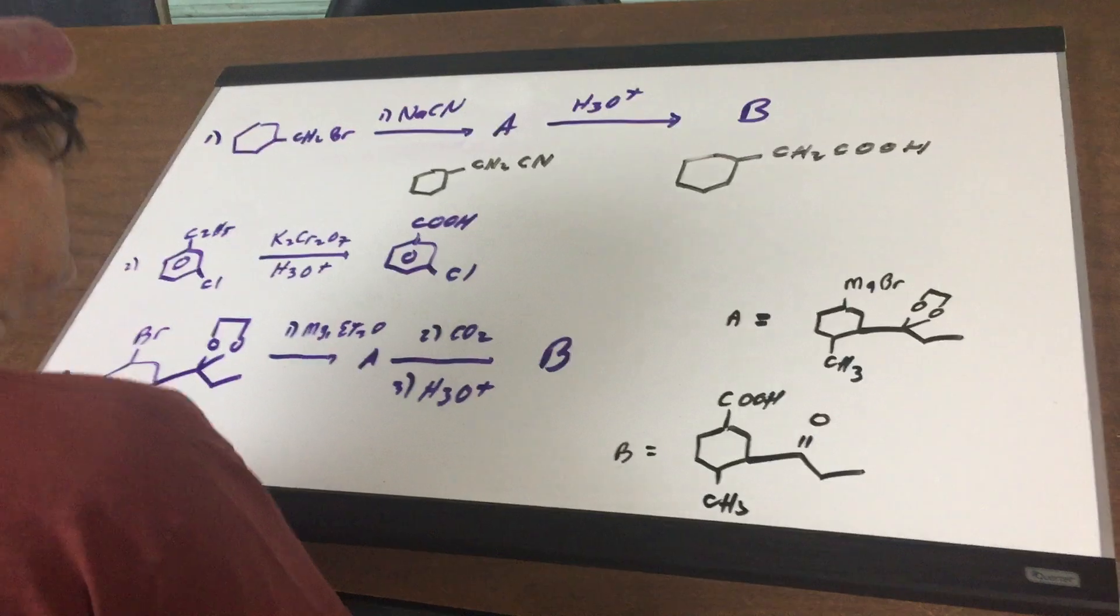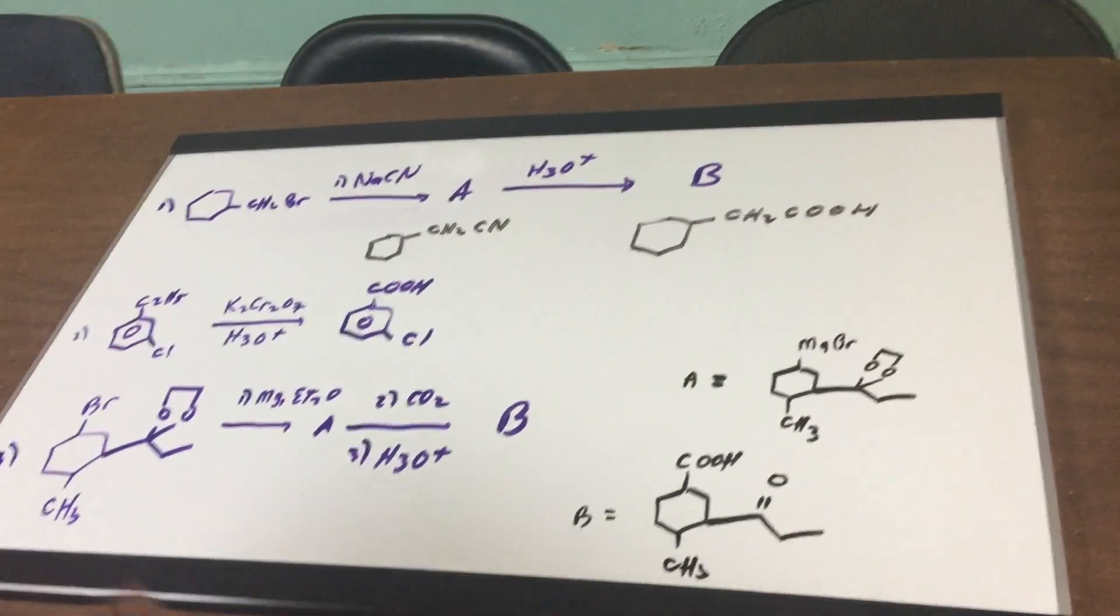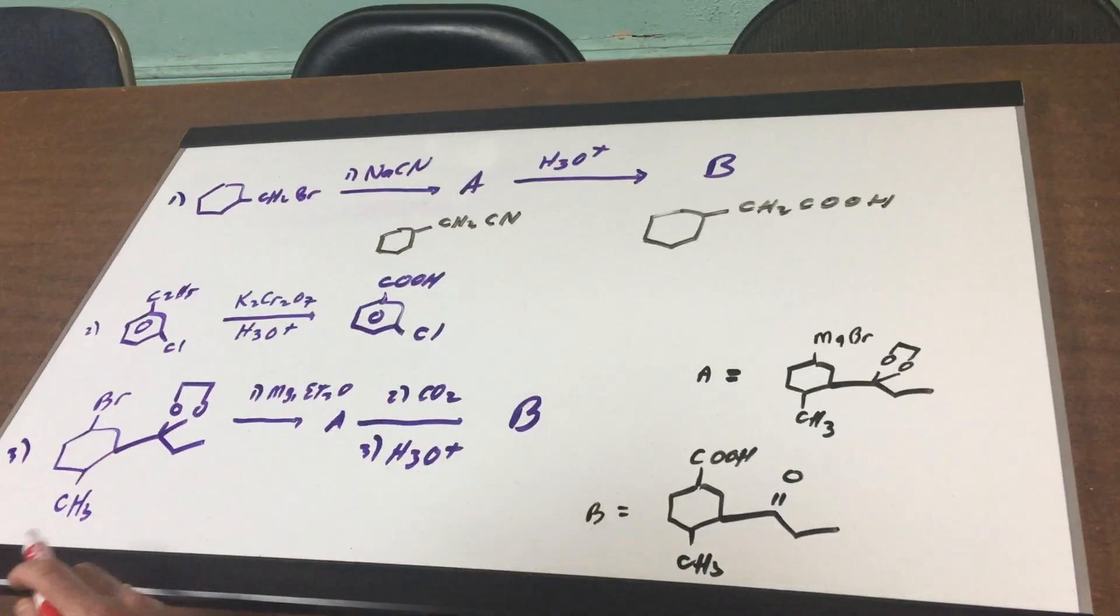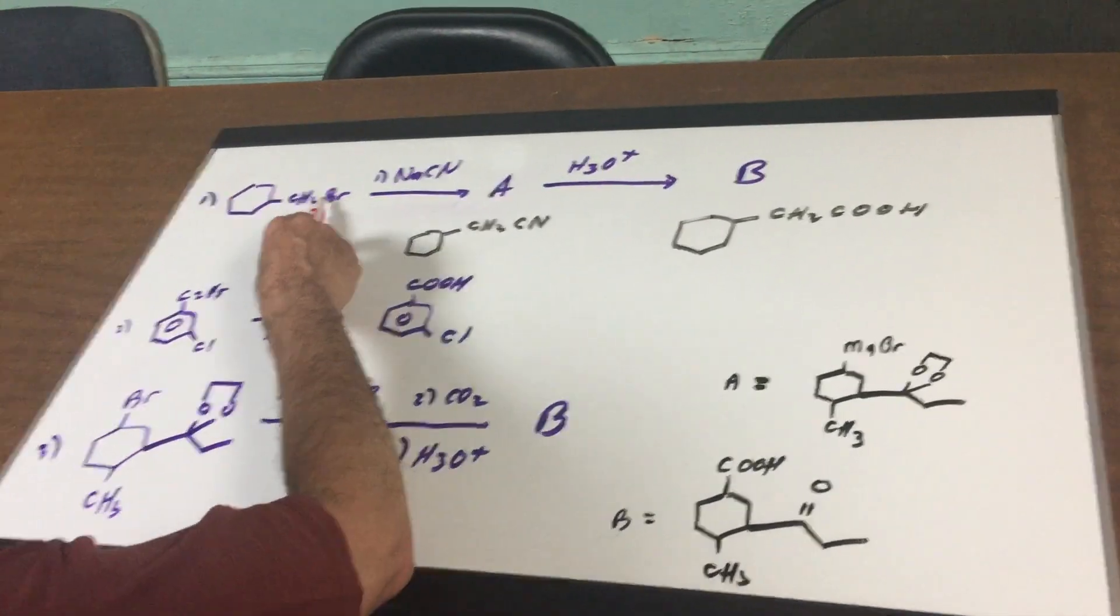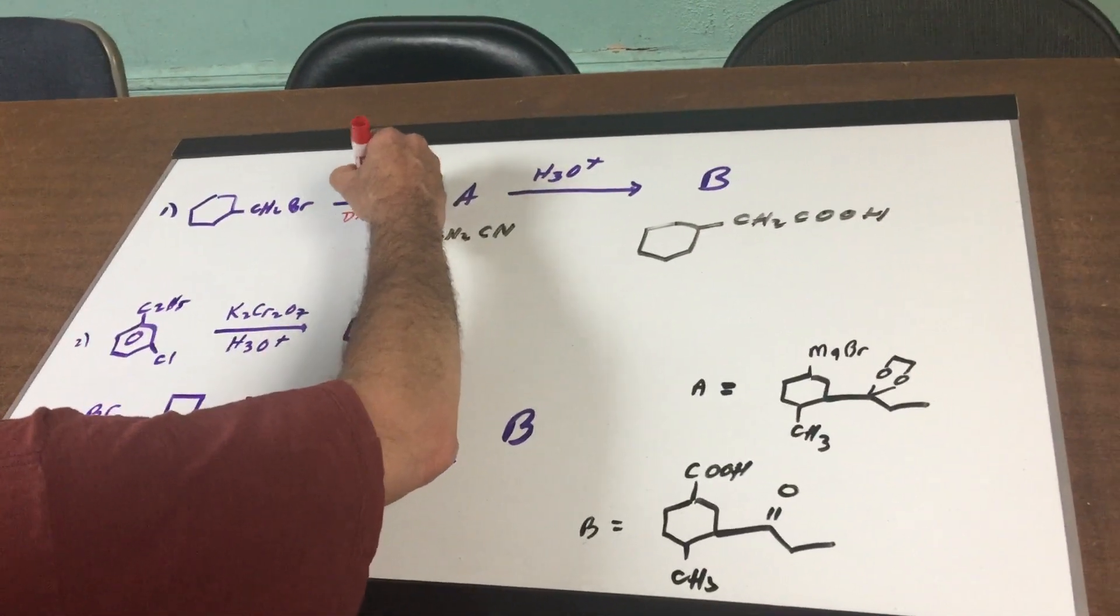I'm going to show you three quick reactions that you need for the DAT involving carboxylic acids. The first one, if you have NACN, all we would simply do, I'll put a solvent here. Usually we use a polar aprotic solvent.